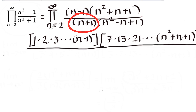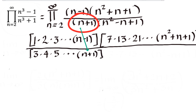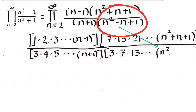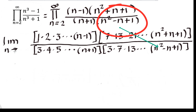For the denominator's first factor (n plus 1): when n equals 2 it is 3, when n equals 3 it is 4, and the pattern continues until n plus 1. For the second factor (n squared minus n plus 1): when n equals 2 it is 4 minus 2 plus 1 equals 3, when n equals 3 it is 9 minus 3 plus 1 equals 7, when n equals 4 it is 16 minus 4 plus 1 equals 13, and the pattern continues until n squared minus n plus 1. We want the limit as n approaches infinity.